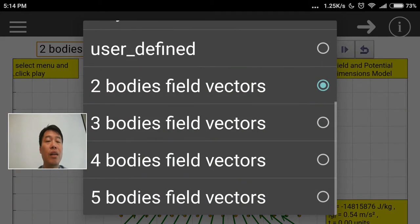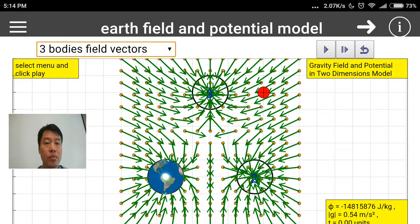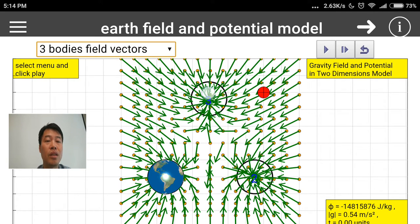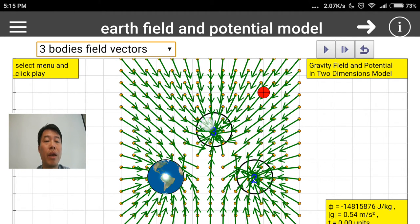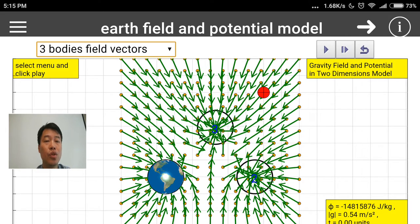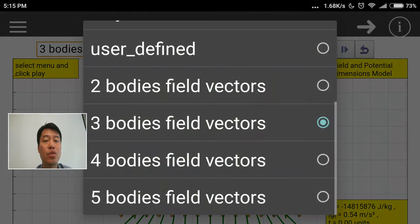So if this is a three-body system, then you can see that now you can drag this and you can see how the field lines can be imagined to be drawn. Now why is this useful? Five bodies field vectors. Why learning this will be meaningful?